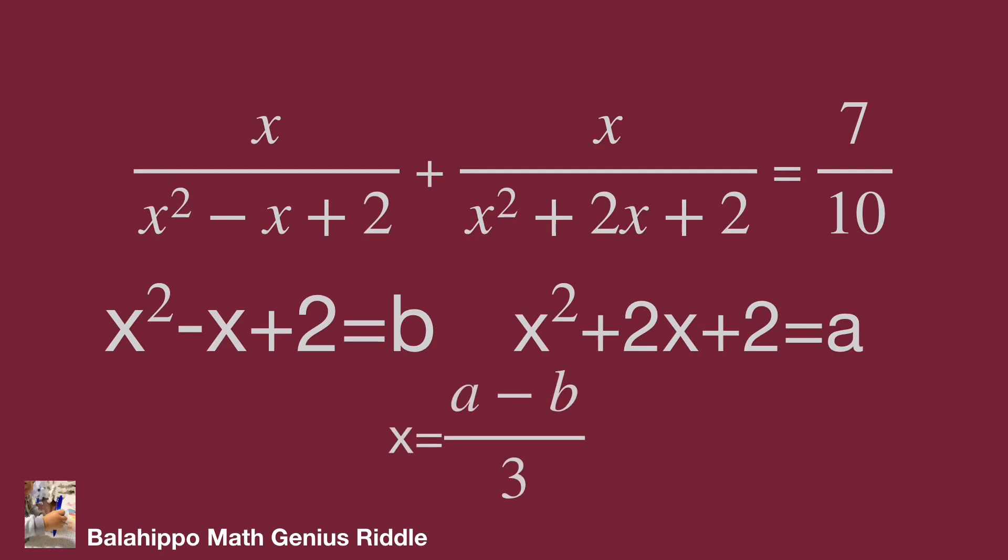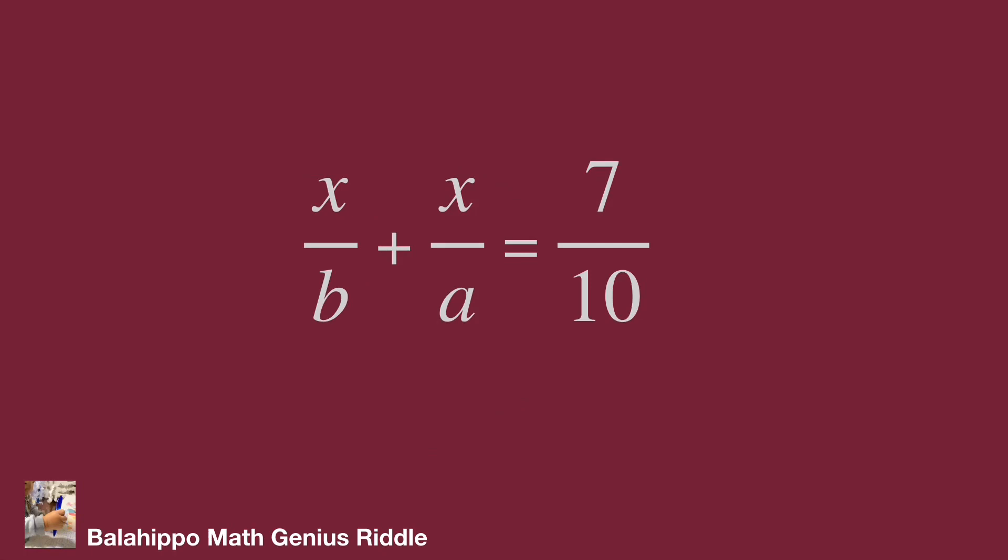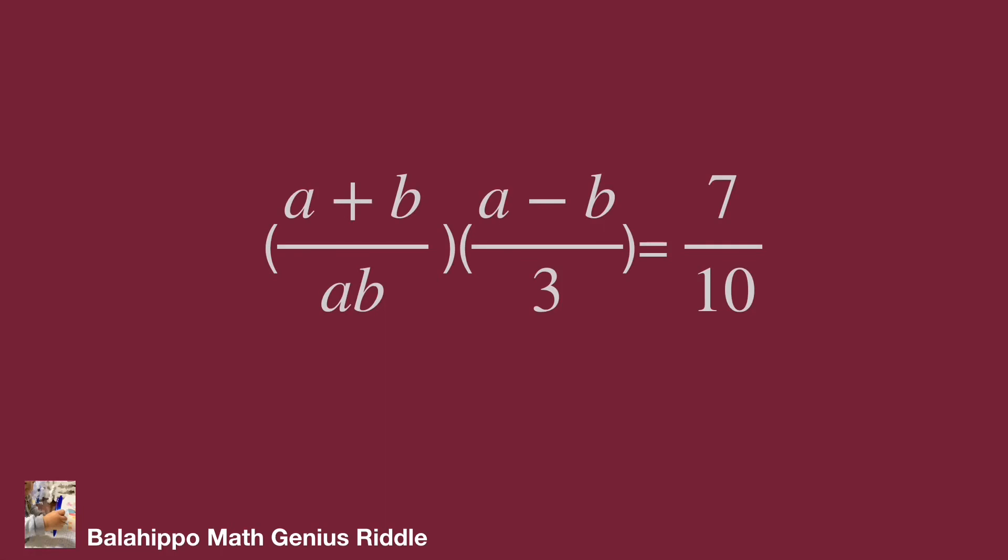Now we have useful information here. Then substitute x squared plus 2x plus 2 by a and x squared minus x plus 2 by b in the equation. It becomes x over b plus x over a equals 7 over 10. This is 1 over b plus 1 over a times x equals 7 over 10. By addition, 1 over a plus 1 over b equals a plus b over ab. And substitute x by a minus b over 3 into the equation.